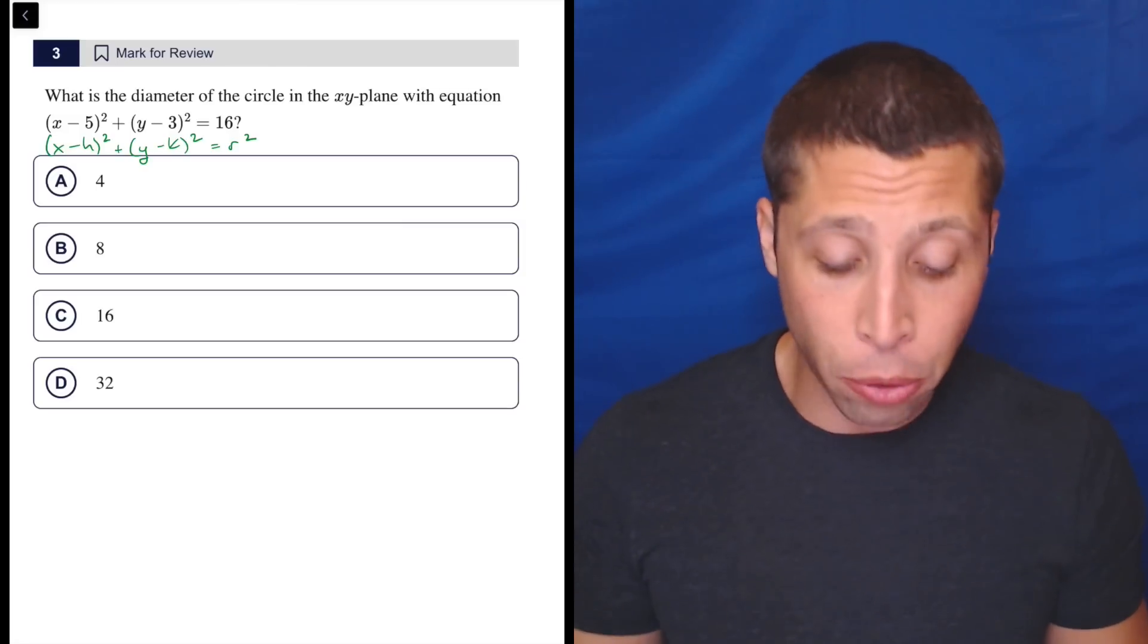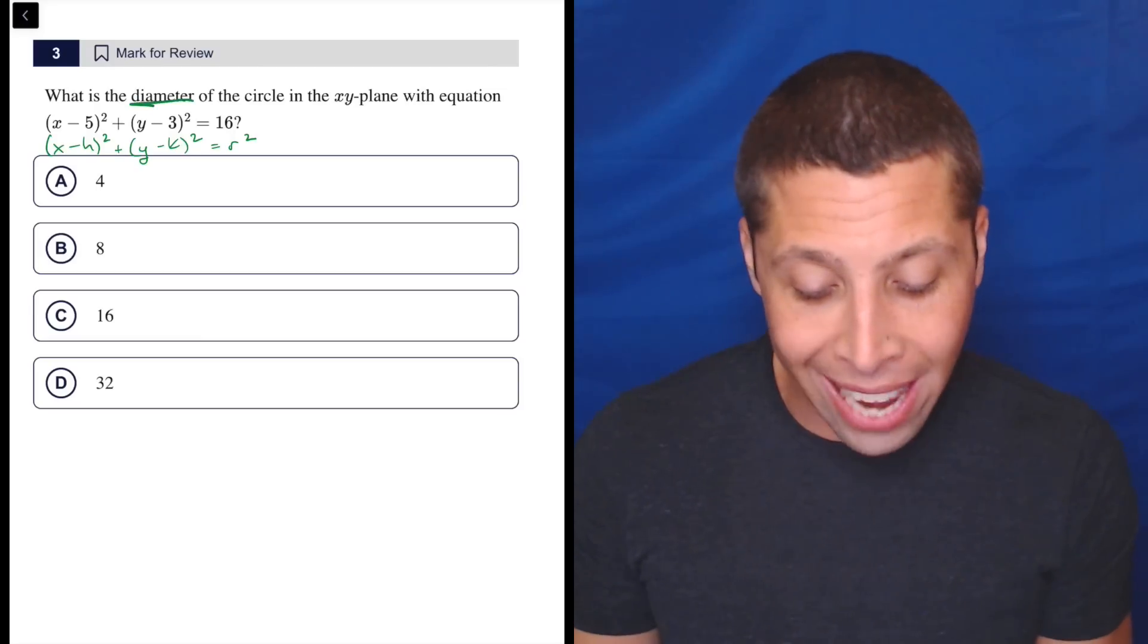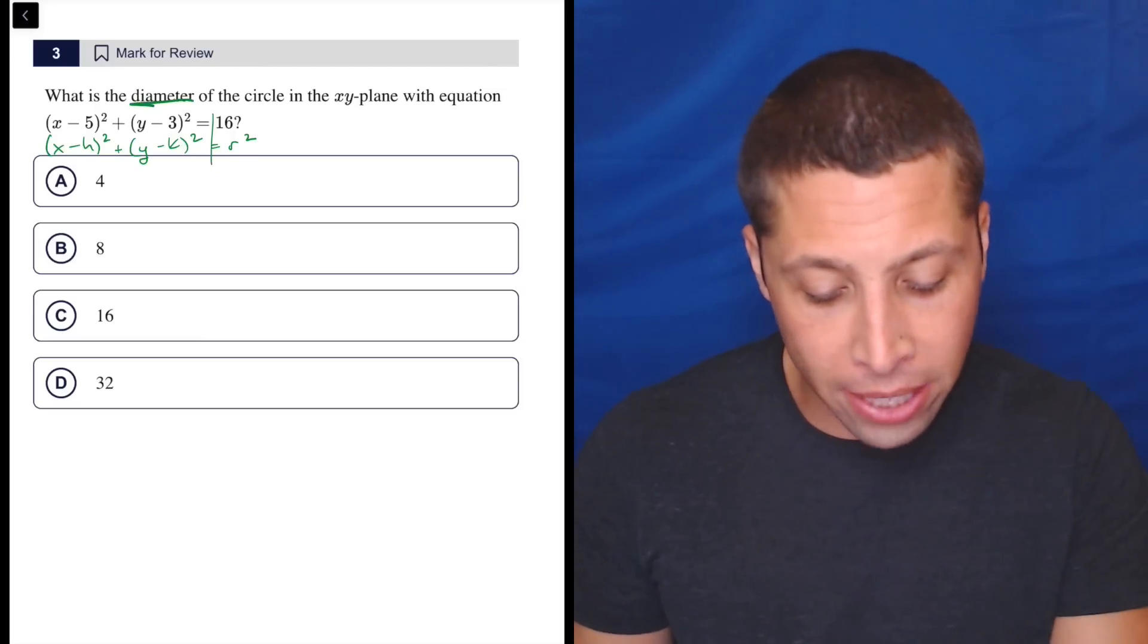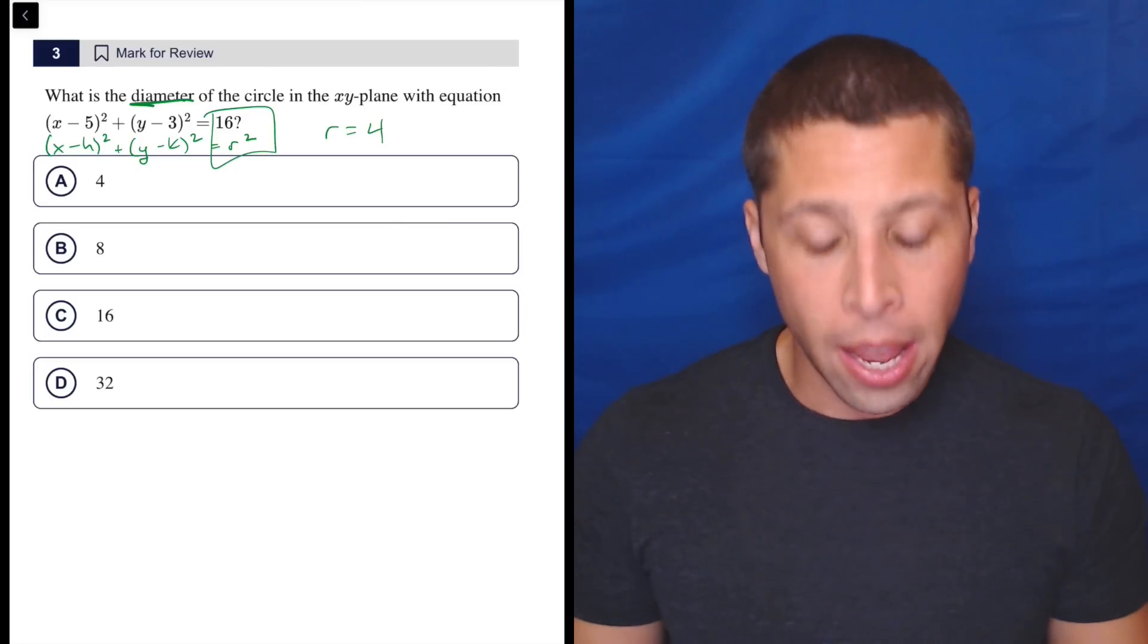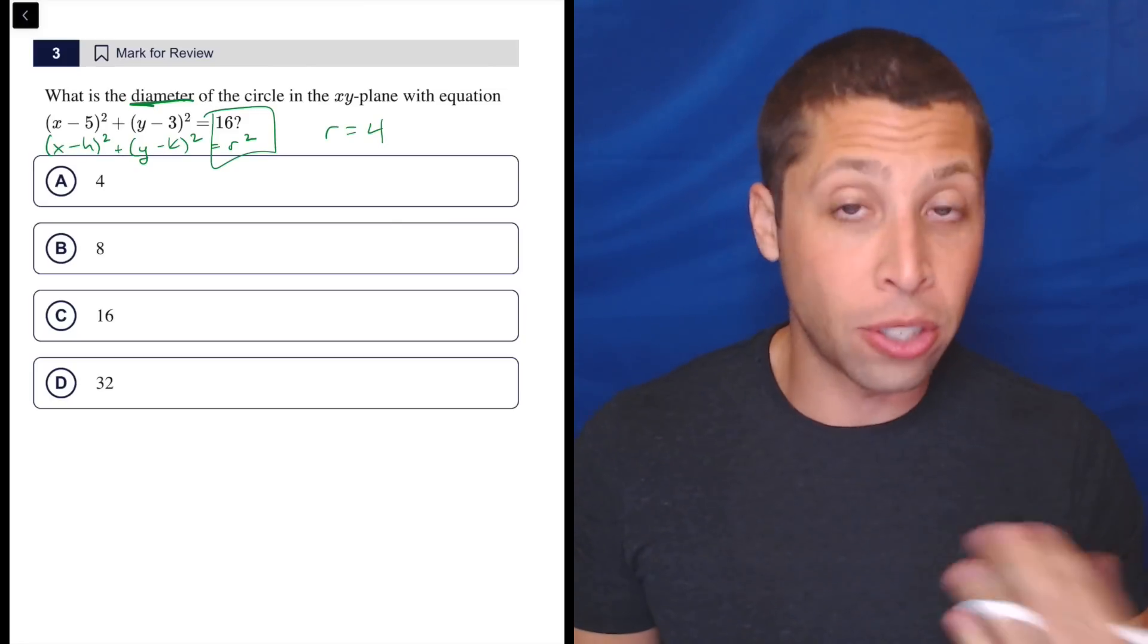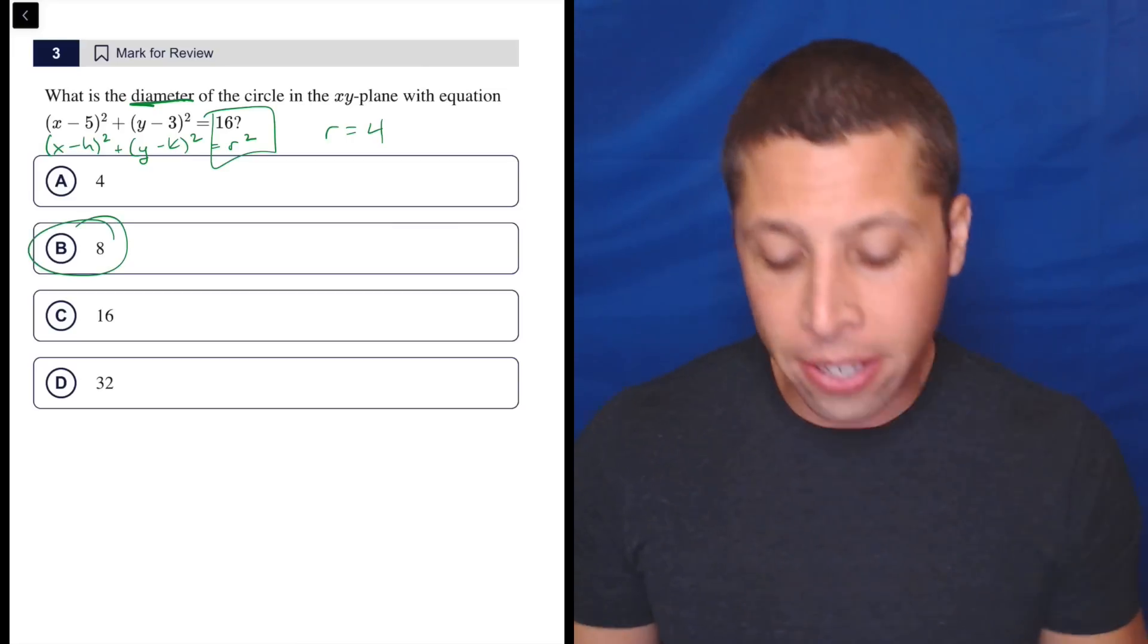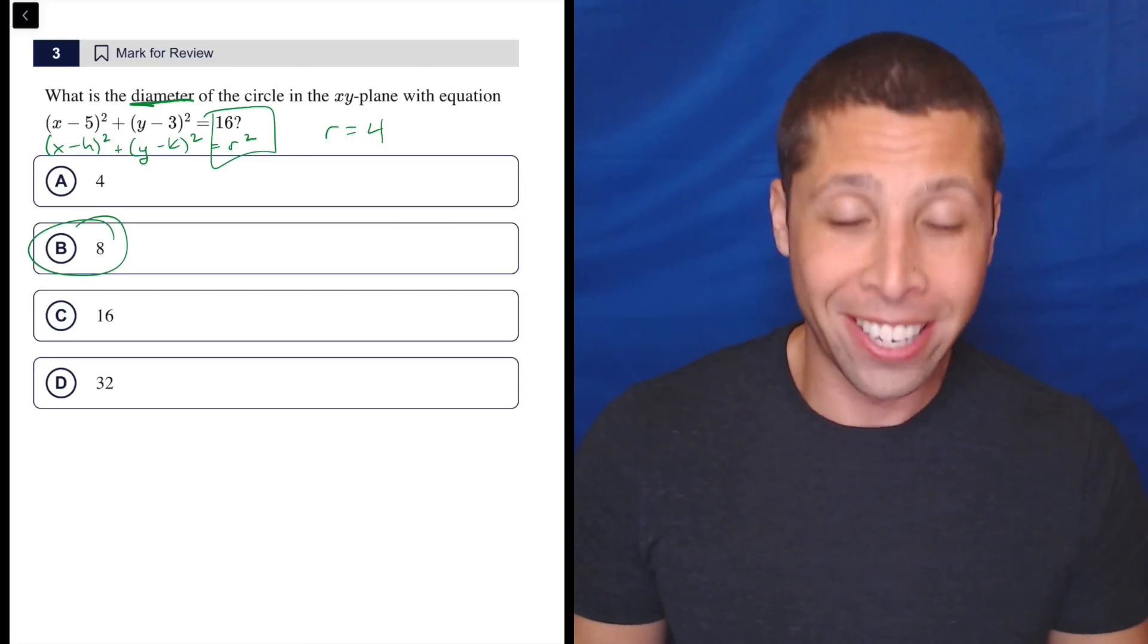And that doesn't really matter for us, but the radius does because they want to know the diameter of the circle. So if 16 is the radius squared, then the radius itself is 4. And then remember the diameter is just double the radius. So 8 is the diameter.